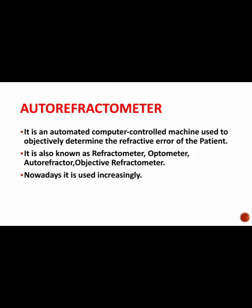Hello friends, in this video we are going to see about autorefractometer, also called AR. AR machine is an automated computer controlled machine and it is used to objectively determine the refractive error of the patient. By using the AR machine we determine the refractive error of the patient in the objective method.